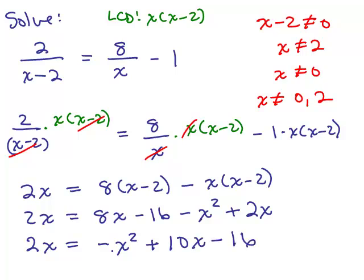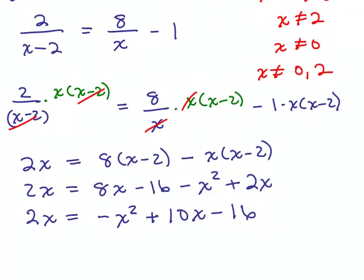We've simplified both sides. Now we have to analyze this problem — we have a quadratic, an x squared term. You can't just put variables on one side and constants on the other. We need to set the equation equal to 0 when you have a quadratic. Let's put everything on the left side. We get x squared; subtracting 10x gives 2x minus 10x, which is minus 8x; and adding 16 to both sides gives plus 16. So x squared minus 8x plus 16 equals 0.